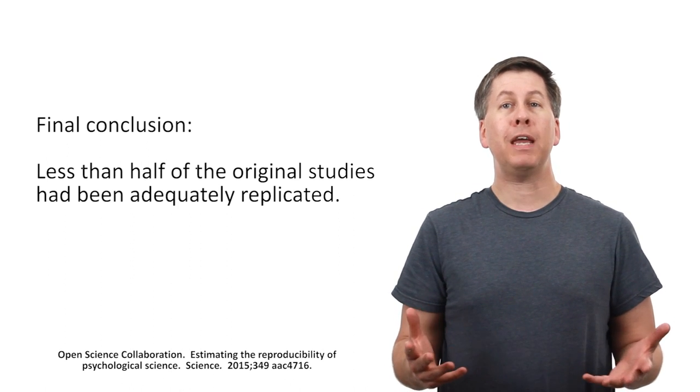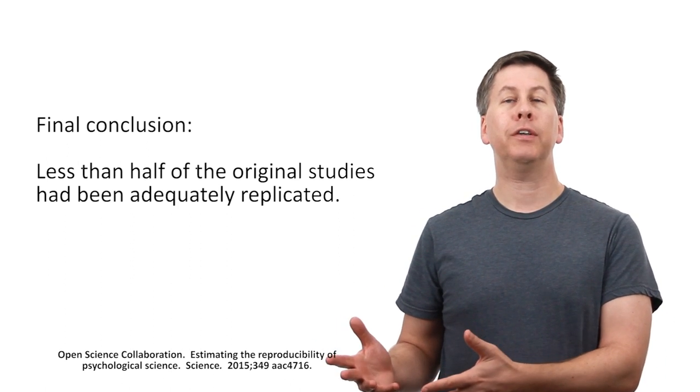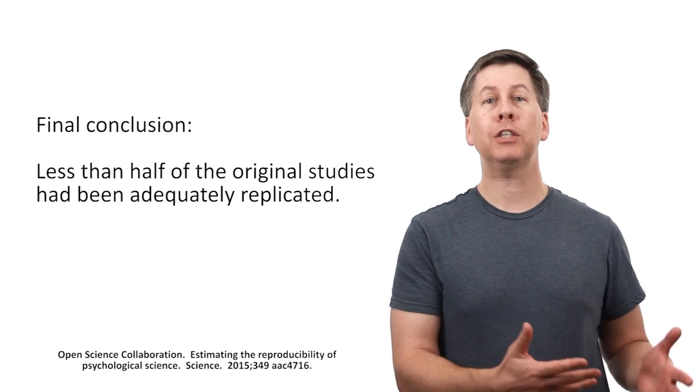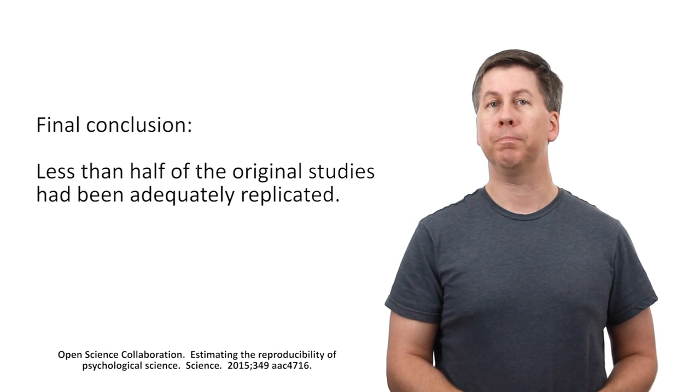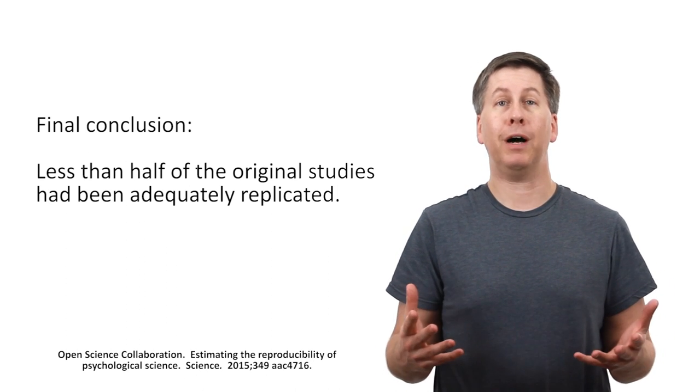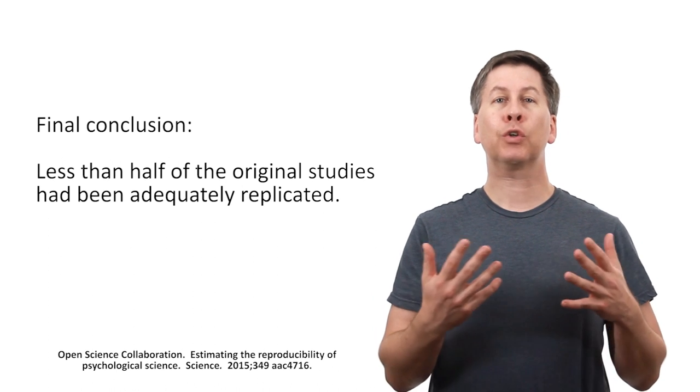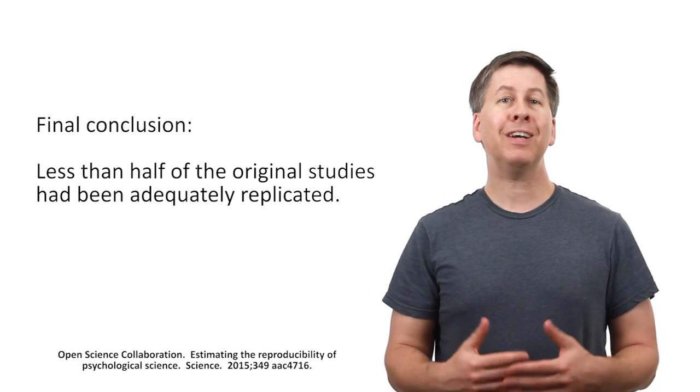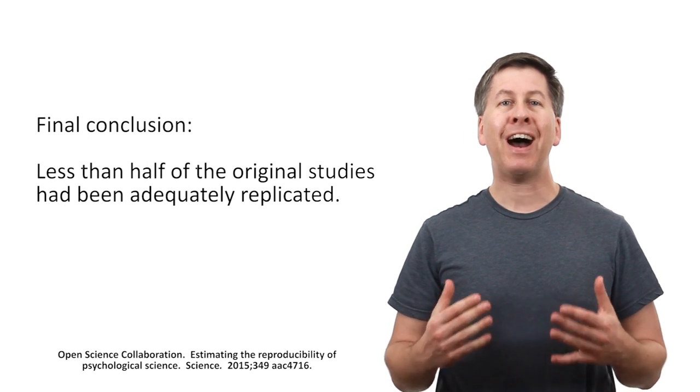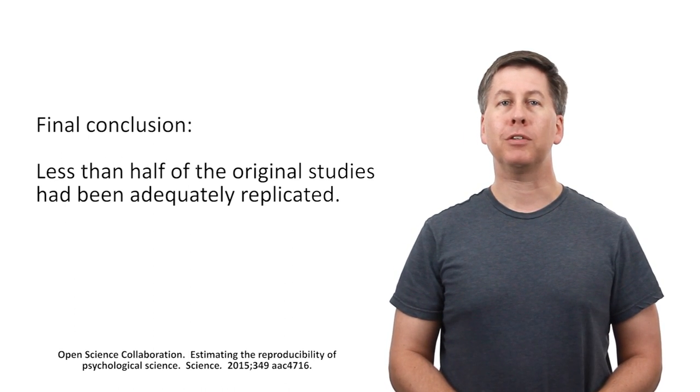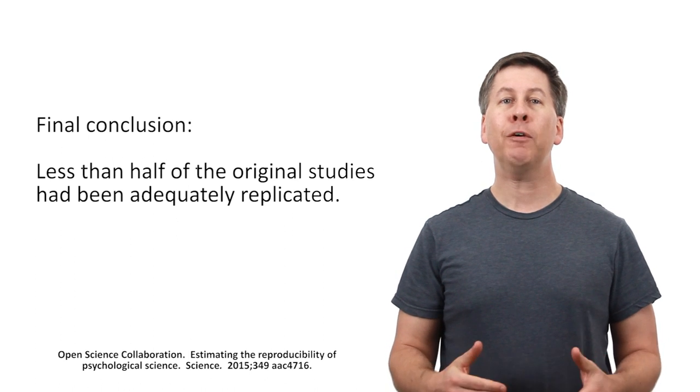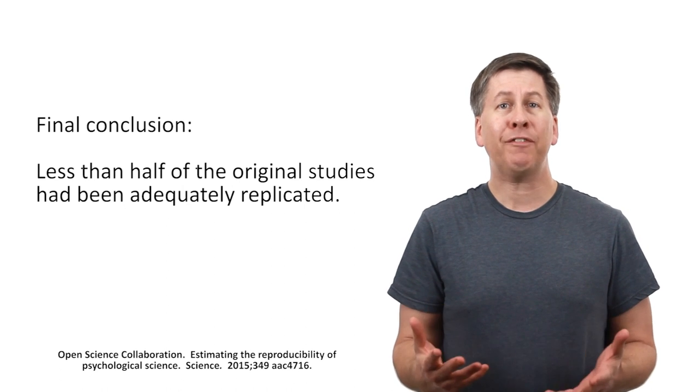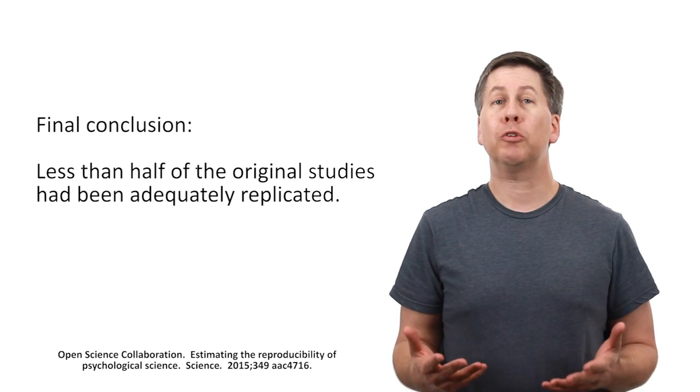This doesn't necessarily mean that any one of the contradicted original studies was wrong per se. It's certainly possible that the corresponding replication study was the one reaching the wrong conclusion. And it's also possible that an original and its corresponding replication study were both wrong. But it doesn't actually change the conclusion that we have a lot of difficulty repeating experiments. And if at least half of published research can't be successfully replicated, it suggests that at least half of published research is wrong to begin with.